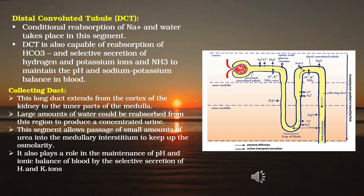The collecting duct extends from the cortex to the inner parts of the medulla. Large amounts of water can be reabsorbed from this region to produce concentrated urine. It allows the passage of small amounts of urea into the medullary interstitium to maintain osmolarity. It also plays a role in maintaining pH and ionic balance of blood by selective secretion of hydrogen ions and potassium ions.